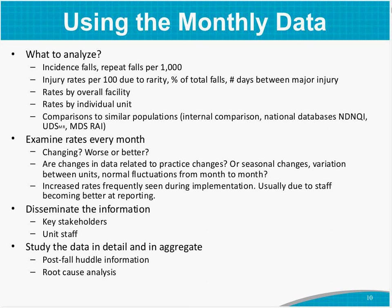Several articles researched for this talk address the steps for using monthly data. Things to analyze include falls per 1,000 occupied patient days, falls with injury per 100 patient days, or the percent of total falls that result in injury. Some use the number of days between major injuries. There can also be rates by overall facility or by individual units. For comparison, the toolkit says — and the speaker agrees — that the best comparison is against yourself and your trends going forward.